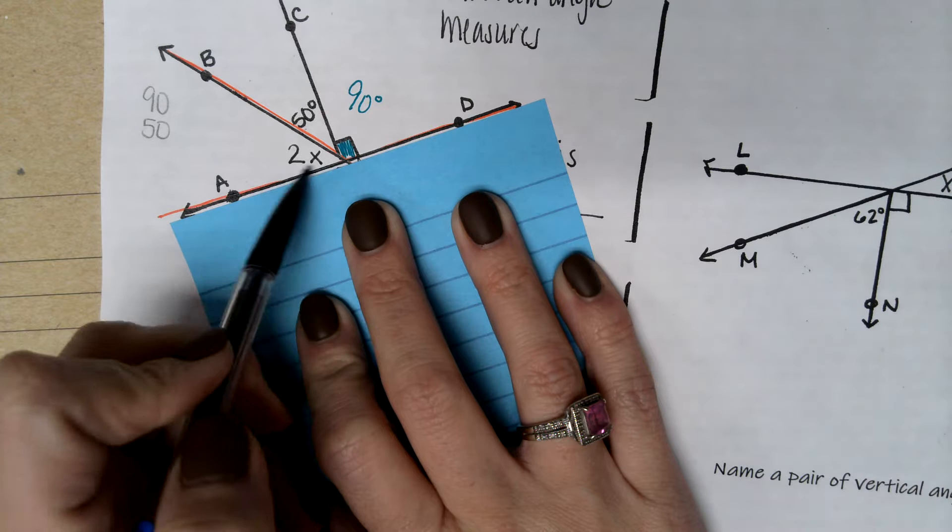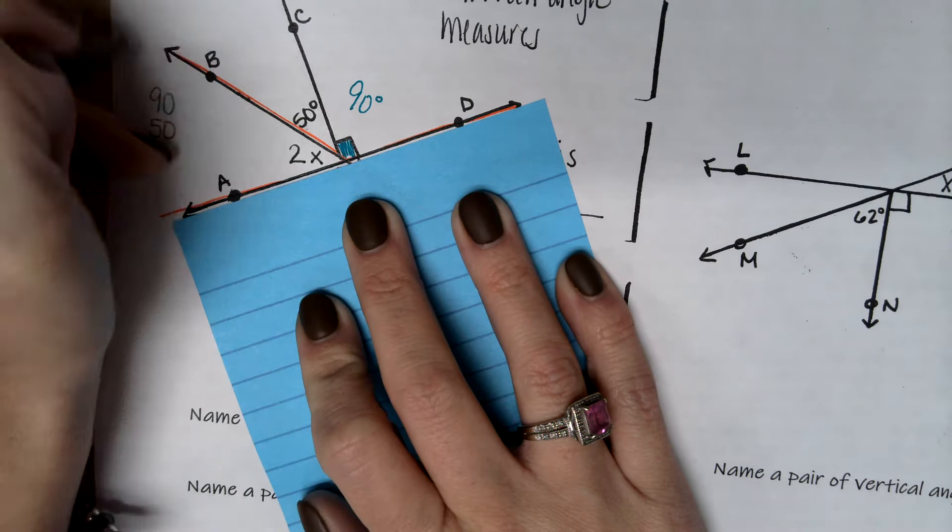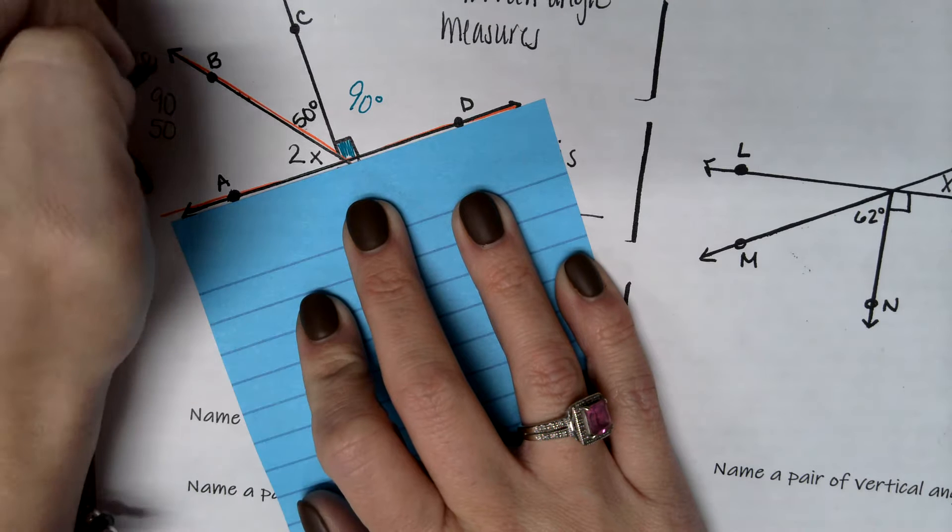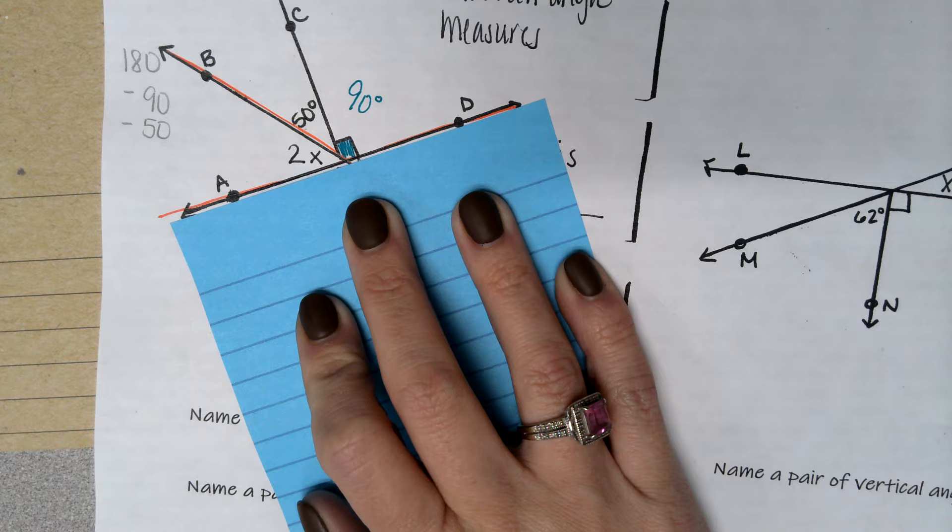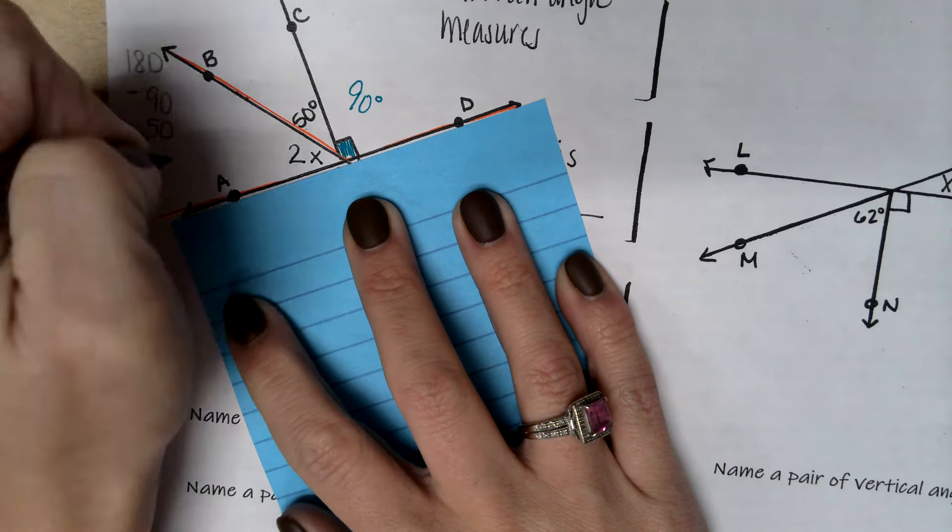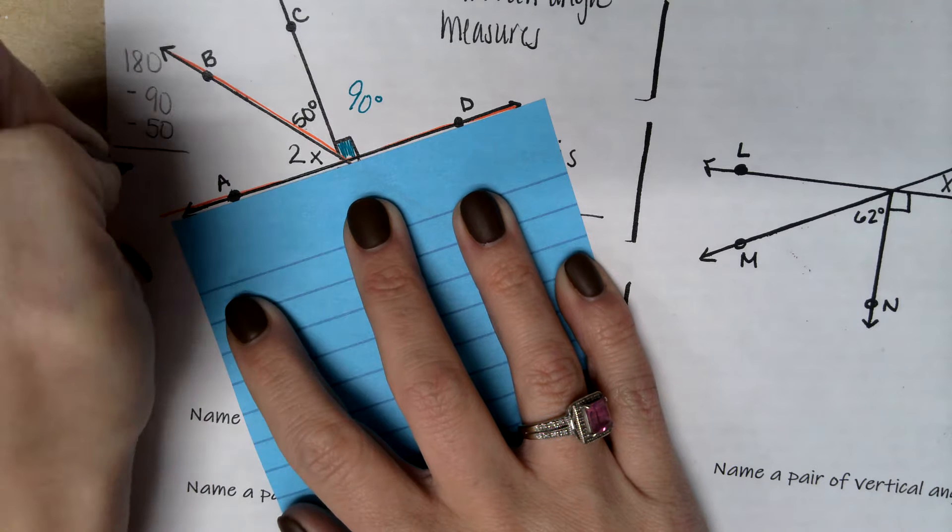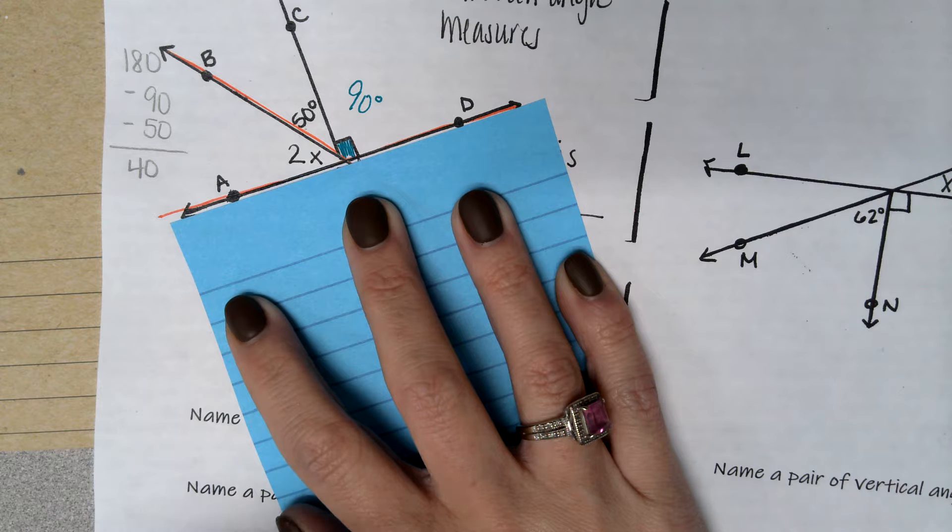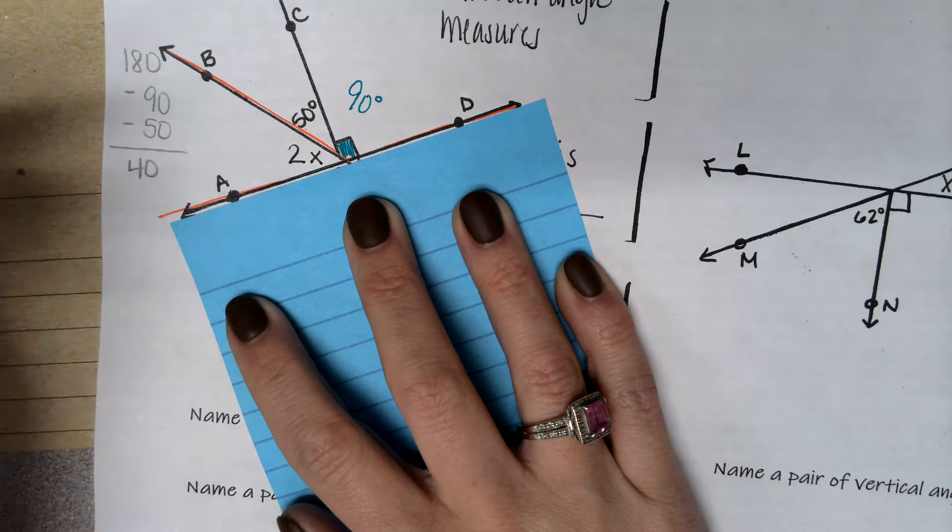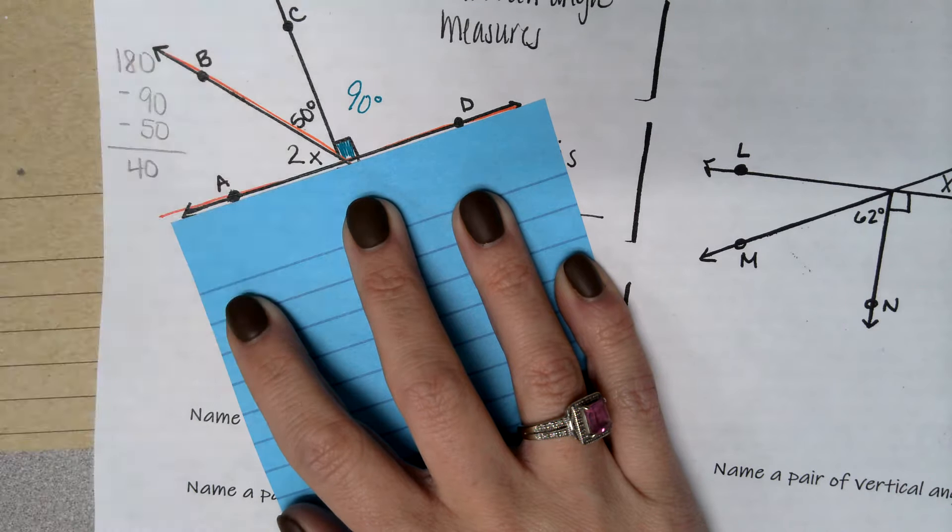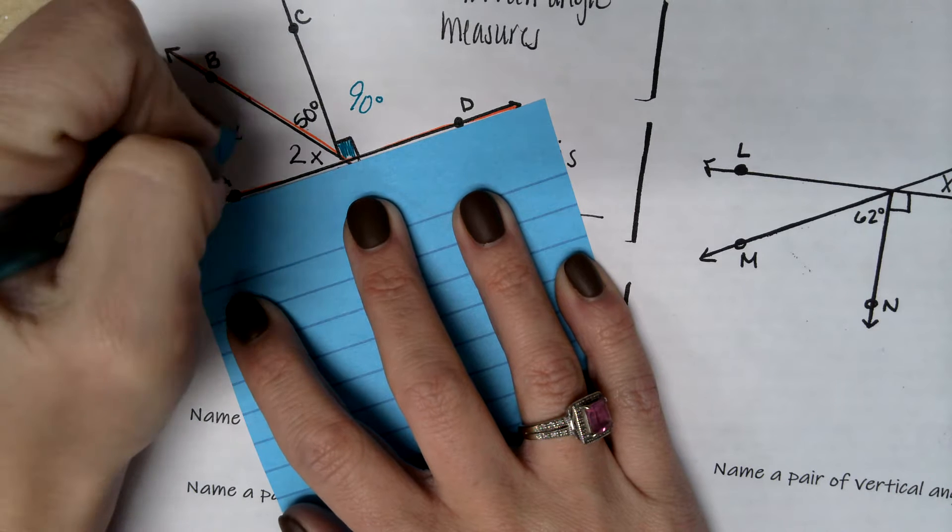And then I have this measure that is 2x. So what I'm going to do, I'm going to take 180 degrees. And I'm going to subtract 90 and I'm going to subtract 50. And what I'm left with here is 40. So this angle measure here itself is 40 degrees.